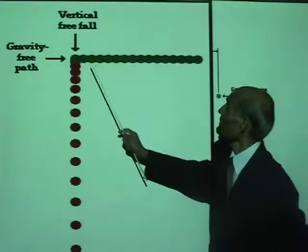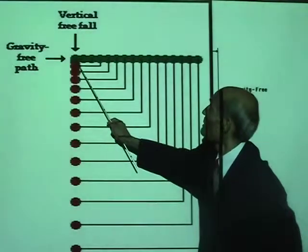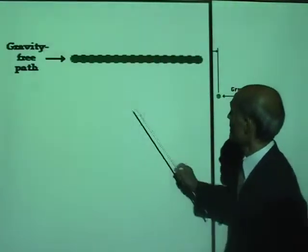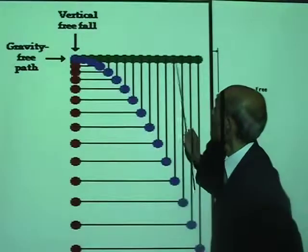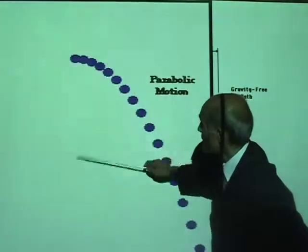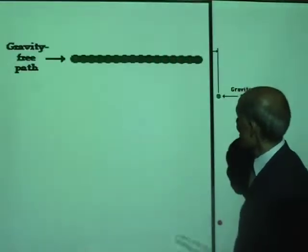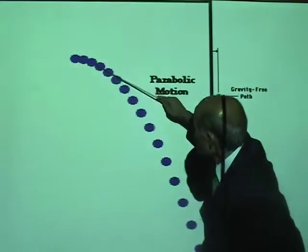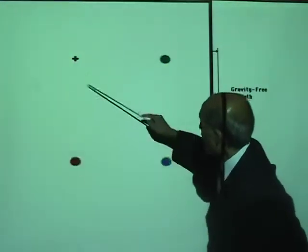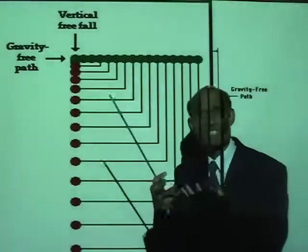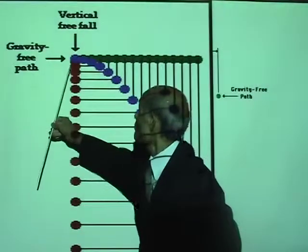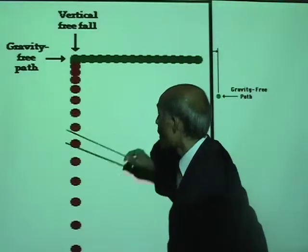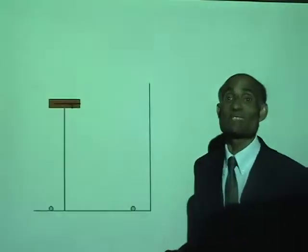Watch the animation: I'm projecting one ball horizontally and dropping another. You can see the independence of horizontal and vertical motions. The vertical motion of the projected ball and the dropped ball are exactly the same. If you project the ball horizontally and simply drop another ball, they will both fall to the ground at the same time.